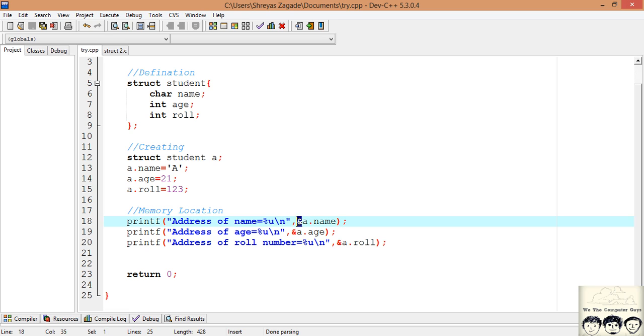I have used the address-of operator. The address-of operator basically gives the address of that particular variable. So a.name, I am asking for the address of the name which is stored inside the structure variable 'a', and I will print it.